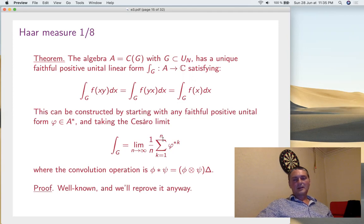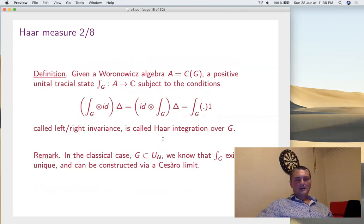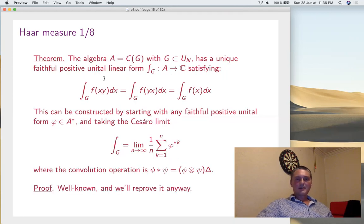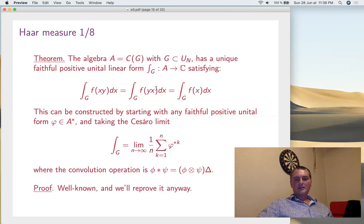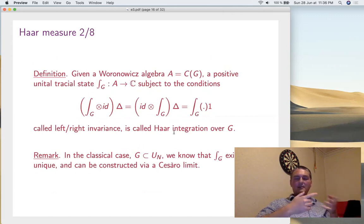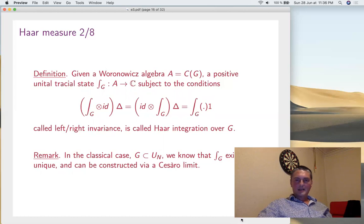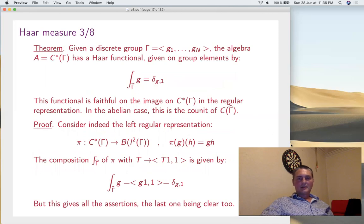In general, we'll take the invariance condition — left and right — and say that's an integration. Something satisfying this condition will be called Haar integration. What we've seen is exactly that C(G) has a unique Haar integration constructed via Cesàro limits starting with any positive functional on A. Now let's look at the discrete group case before getting to the general case. There, the situation is very simple: C*(Γ) has a Haar functional, and on group elements it's just delta_{g,1} — you get 1 if it's the identity and 0 otherwise.